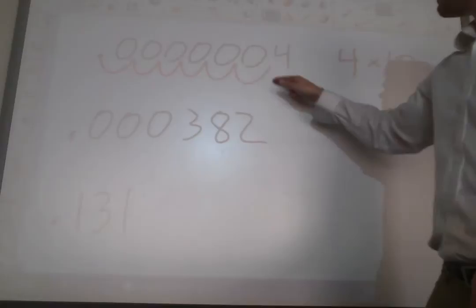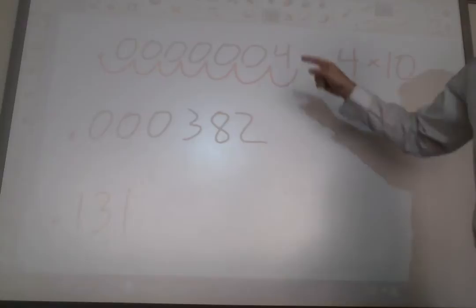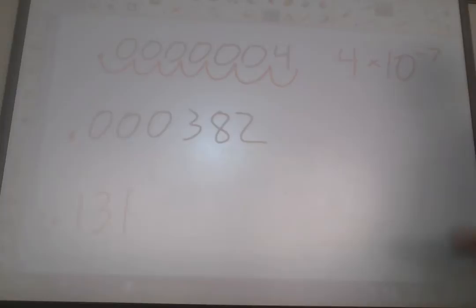And just like before, how many times does the decimal have to hop to get from here to here? 1, 2, 3, 4, 5, 6, 7 times. Now, the only difference is, since this was a small number, instead of putting 7 as the exponent, you're going to put negative 7. That's it. That's the only difference, and that's how we would write that.